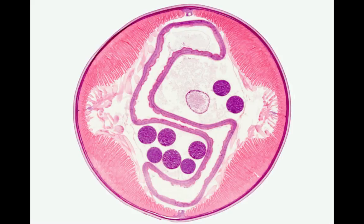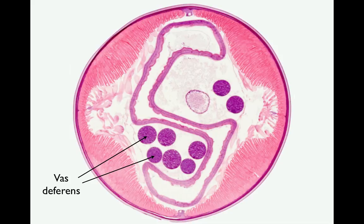Looking back at the cross-section of the male Ascaris, you can see eight different sections of the vas deferens. These vary somewhat in diameter, and if you look carefully, you can see that the cells within the tube increase in size as the tube becomes larger. Once the sperm have completed development, they are stored in a much larger section of tube called the seminal vesicle.